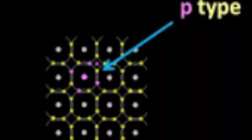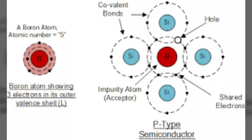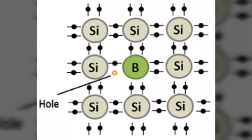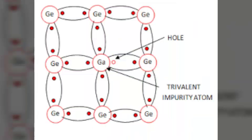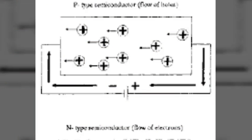Next is P-type semiconductor. When a small amount of trivalent impurity is added to a pure semiconductor, it is called P-type semiconductor. The addition of trivalent impurity provides a large number of holes, so P-type semiconductors are known as acceptors because the holes created can accept electrons. For example, gallium is trivalent and its atom has three valence electrons. Each gallium atom fits into the germanium crystal but only three covalent bonds can be formed. In the fourth covalent bond, only the germanium atom contributes a valence electron while gallium has none. This fourth bond is incomplete, being short of one electron — this missing electron is called a hole. The number of holes is far greater than electrons, so it is called P-type.